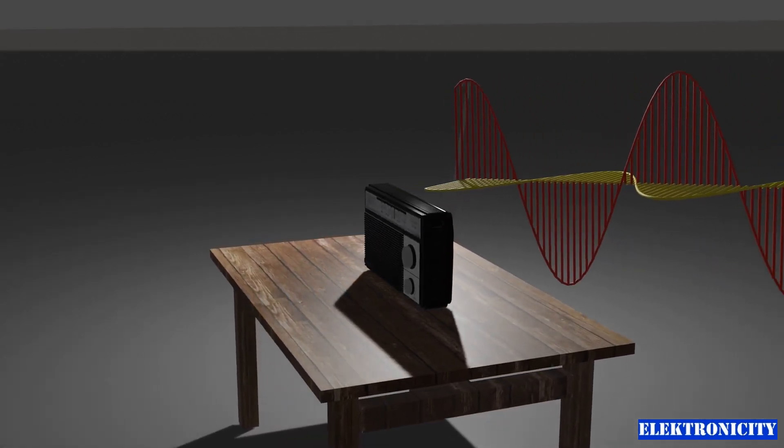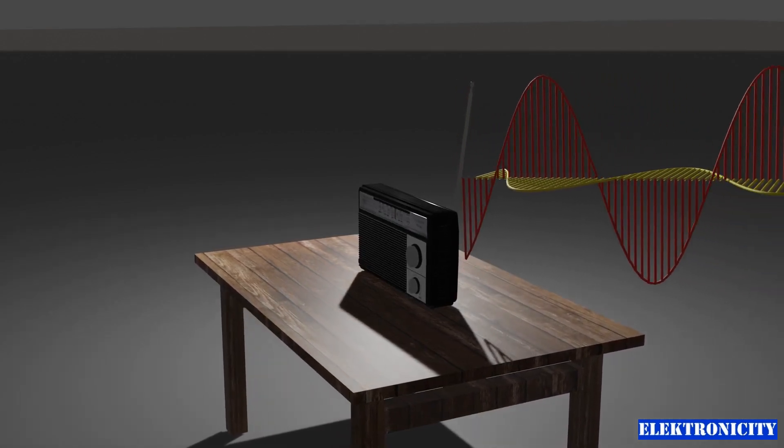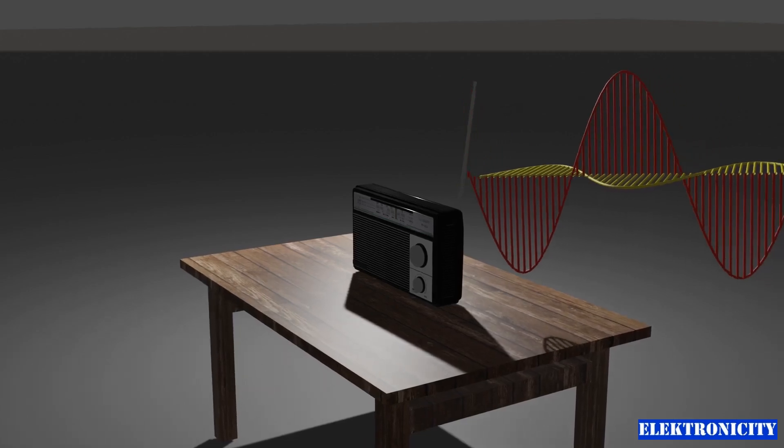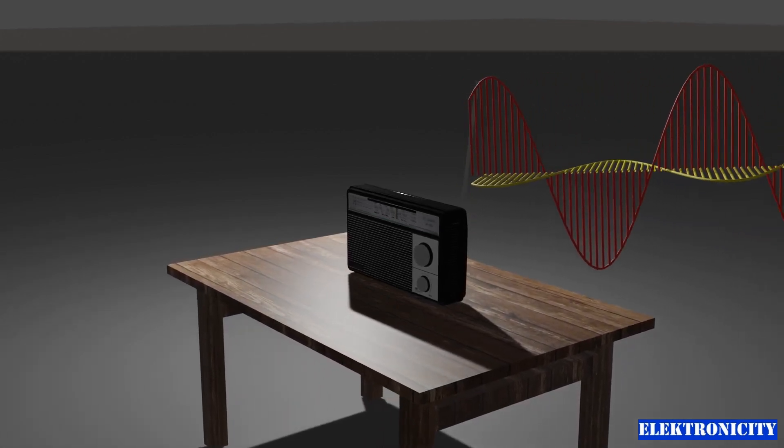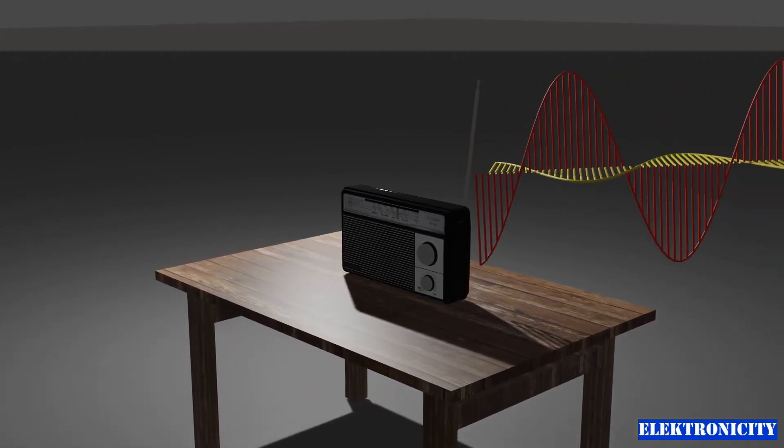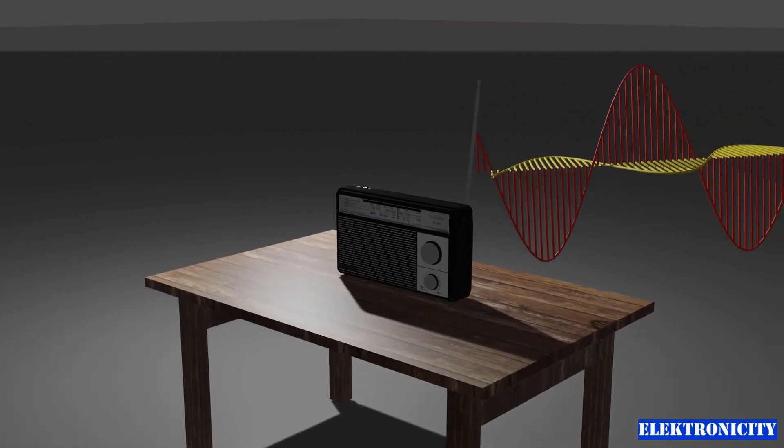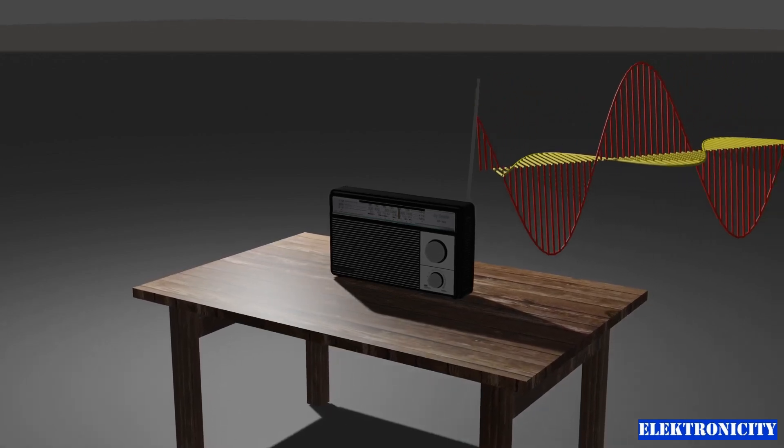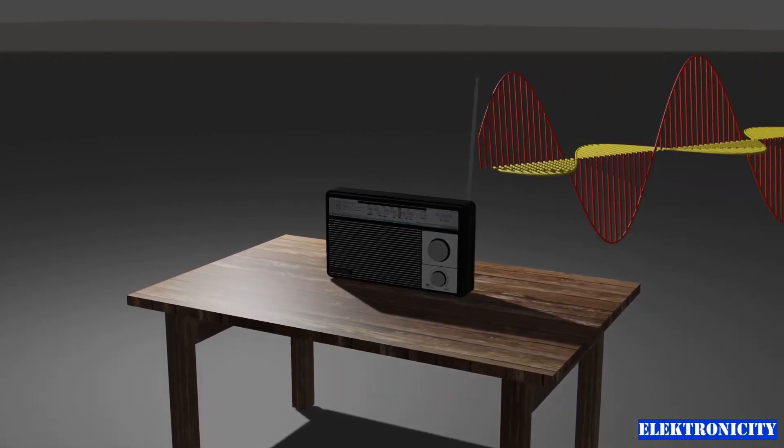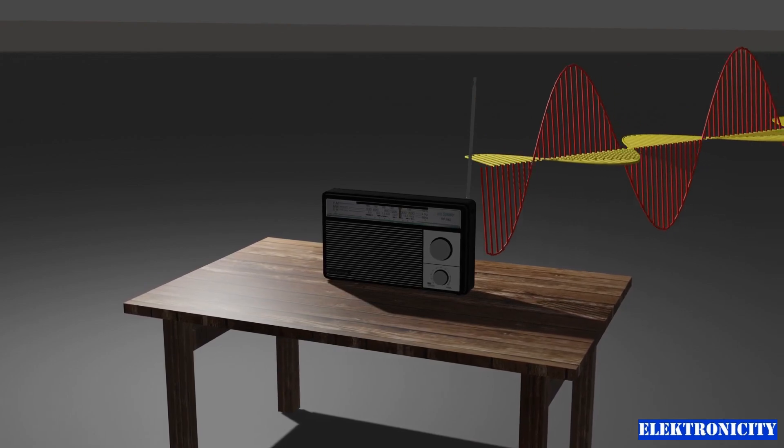In conclusion, we started by learning about electromagnetic waves, modulation, and types of modulation before delving into amplitude modulation, the building blocks of an AM transmitter, and finally the superheterodyne AM receiver.